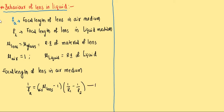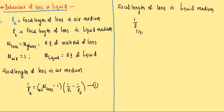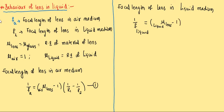For the focal length of the lens in liquid medium, when we dip the lens in the liquid, the medium changes. So we write: 1/FL = (n_lens_with_respect_to_liquid - 1) × (1/R1 - 1/R2). This is equation 2.